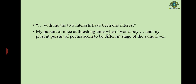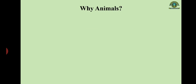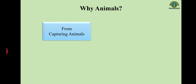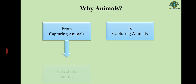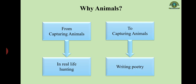This brings us to a very interesting concept: in Ted Hughes we move from capturing animals to capturing animals. The first — capturing animals — refers to real-life hunting, actually capturing animals. The second — capturing animals — refers to writing poetry. So from capturing animals in real life through hunting, Ted Hughes moved to capturing animals through his writing and poetry.